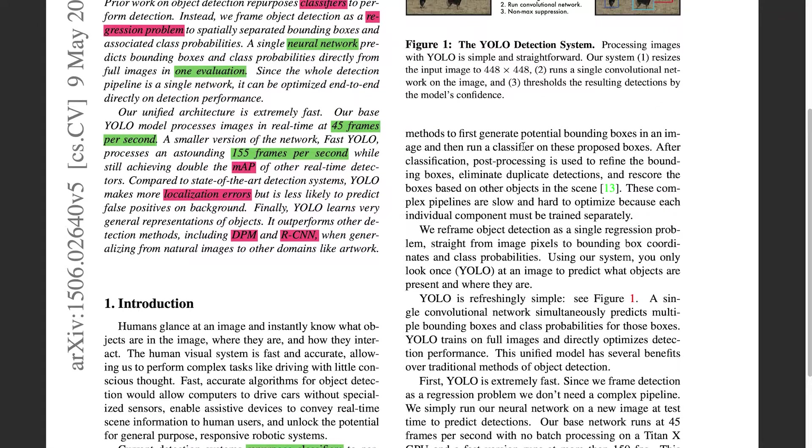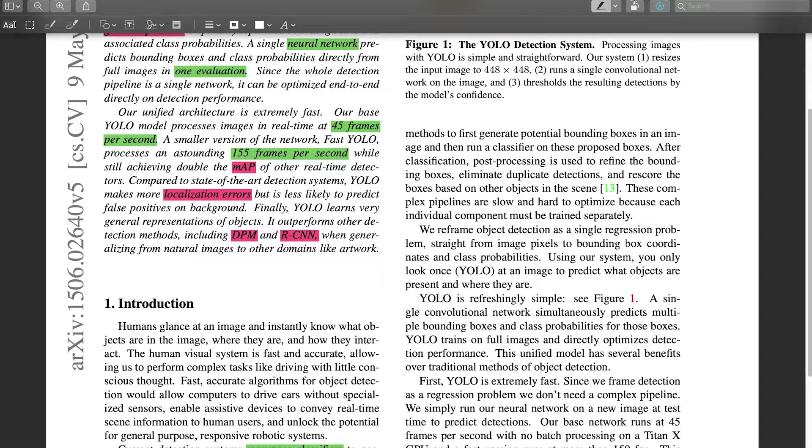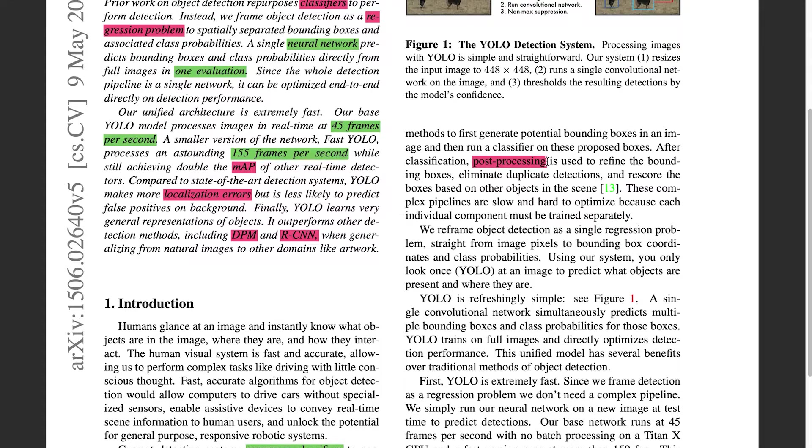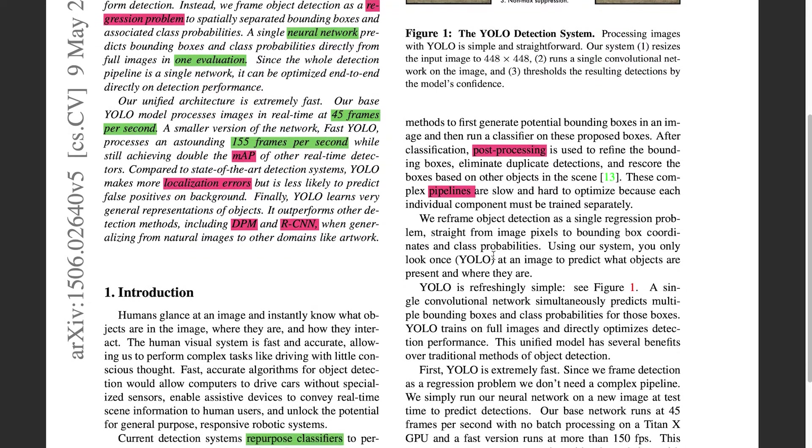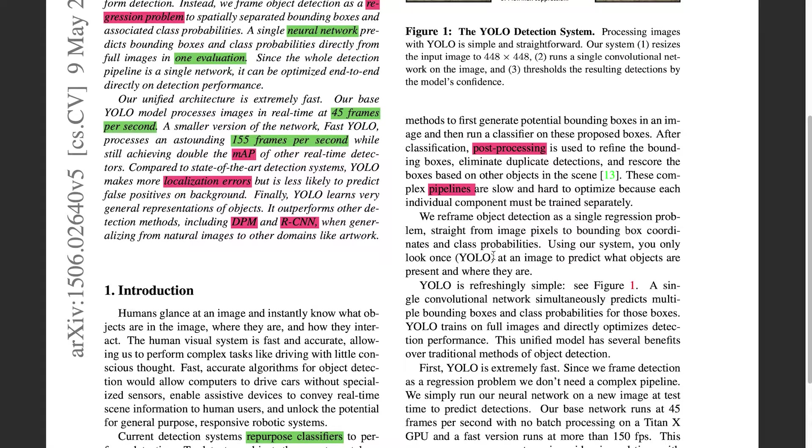Bounding boxes, and then run a classifier on these proposed boxes. After classification, post-processing is used to refine the boxes, eliminate. So I don't quite understand what they mean by post-processing, so I'm going to highlight that. These complex pipelines are slow and hard to optimize because each individual component must be trained separately. Okay, let's look up pipelines, because I've vaguely heard of the word, but I don't quite have an understanding of what it means.